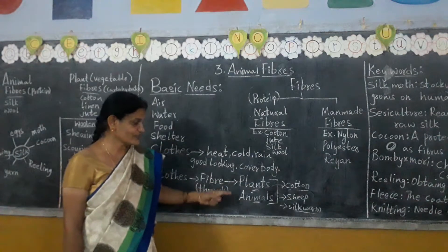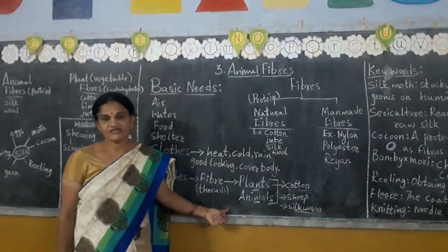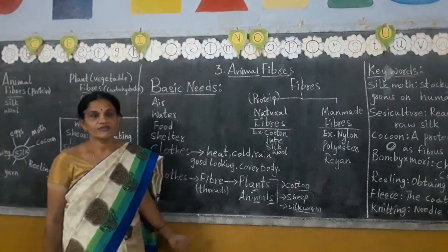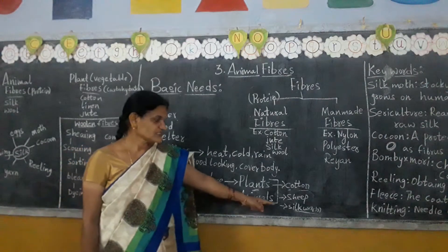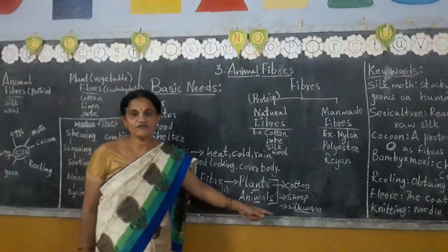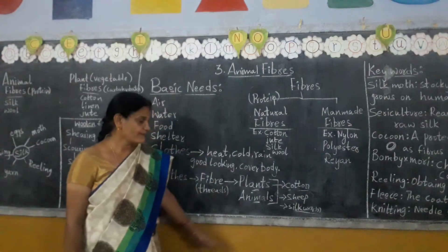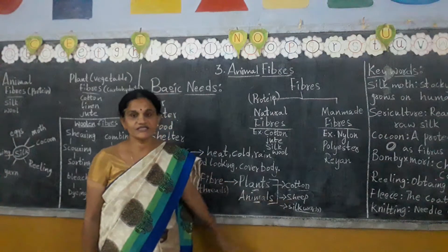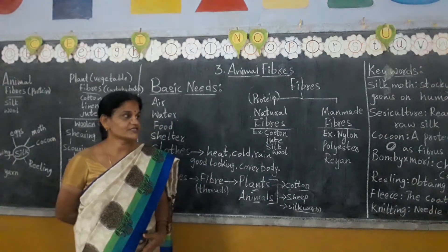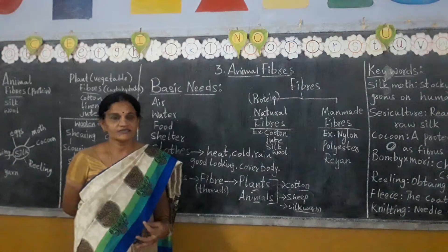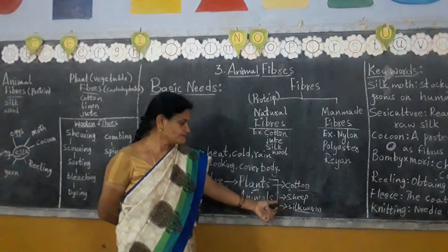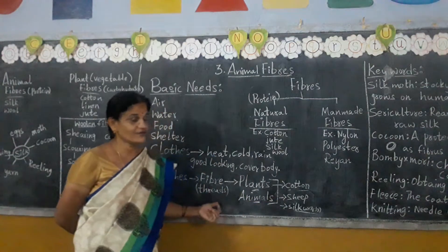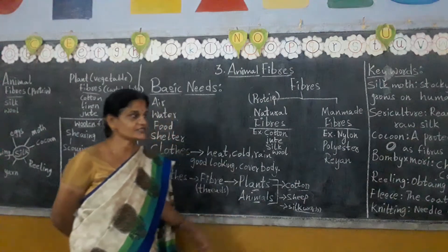From animals, we get especially silk clothes, which are very costly. On occasions we wear that costly silk, which is made from silkworm. In this lesson we are going to learn in detail about silkworm. And also wool — woolen clothes in winter season. We wear woolen blankets, woolen clothes, monkey caps, sweaters. All these woolen things are made from wool. We get wool from sheep or goat. In this lesson we will learn about these in detail.